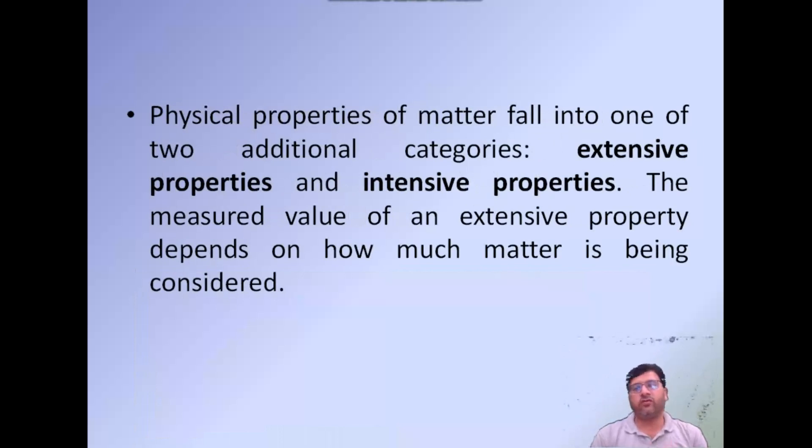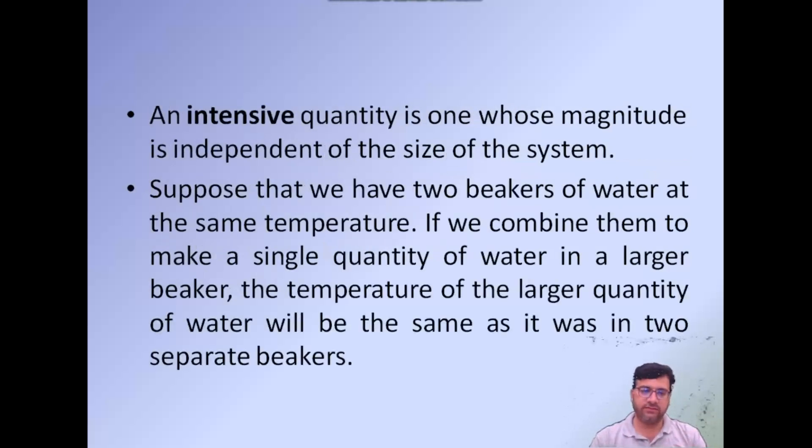Physical properties of matter fall into one of two additional categories: extensive properties and intensive properties. Extensive properties depend on how much matter is being considered, while intensive quantity is one whose magnitude is independent of the size of the system. For example, we have two beakers containing water at the same temperature. If we combine them to make a single quantity of water in a large beaker, the temperature of the largest quantity of water will be the same as it was in two separate beakers.